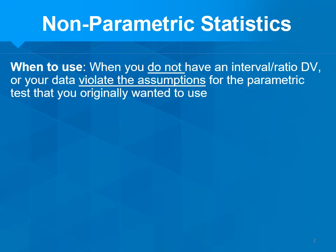When do you use non-parametric statistics? When you do not have an interval or ratio dependent variable — that's one case. The other is where your data violate the assumptions for the parametric tests you originally wanted to use, and you end up having to use the non-parametric equivalent instead.